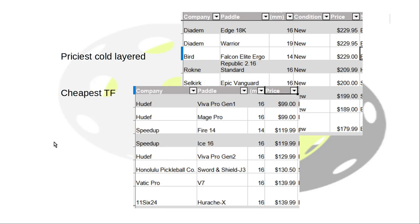The cheapest thermoformed paddles, now you might be interested in this. We've got three from Hudef. By the way, I'm a rep of Hudef, you can see the link in the description. If you're interested in anything from Hudef, my discount code is ANDREW15. Everything's in the description there. I just wanted to throw that out. Speedup and Honolulu, VATIC, and 11-6 around that list. And they're not bad. $99, $120, $130, $140. It's pretty reasonable.